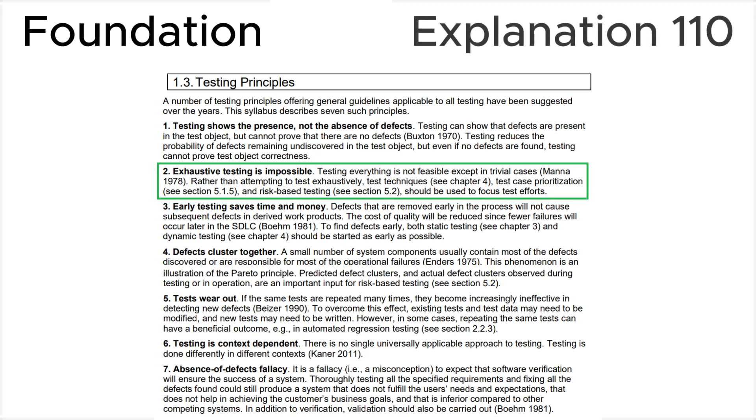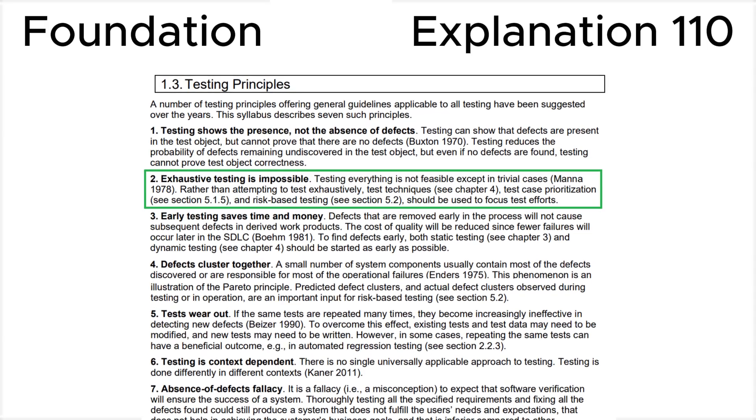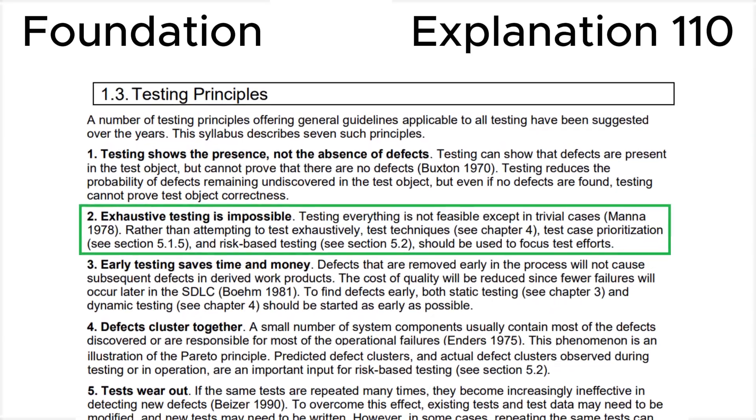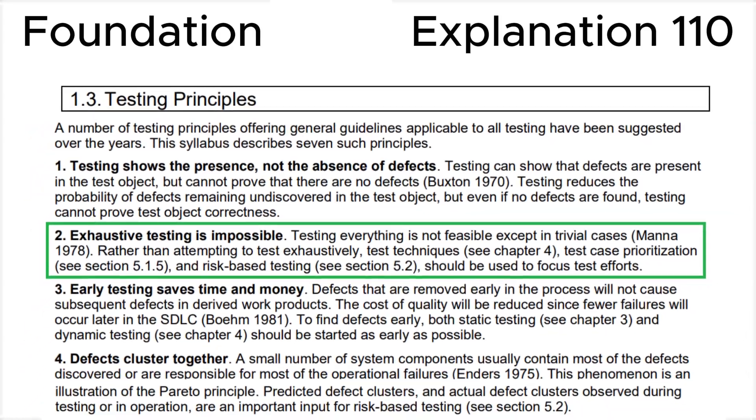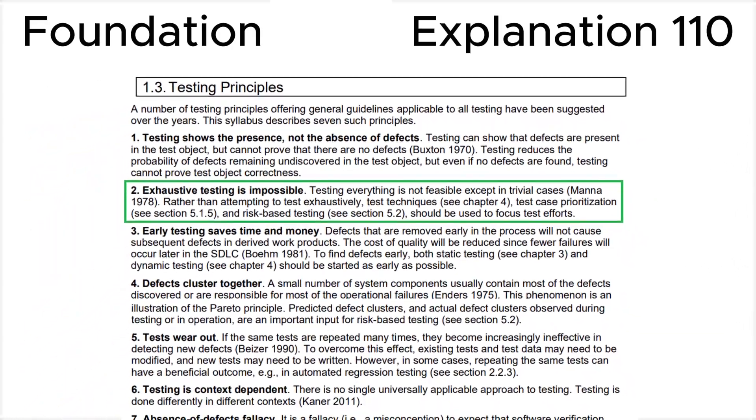Explanation: Finally, let's look at the section 1.3 testing principles in the ISTQB syllabus where we can see that the testing principle 2 is exhaustive testing is impossible. Testing everything is not feasible except in trivial cases. Rather than attempting to test exhaustively, test techniques, test case prioritization and risk-based testing should be used to focus test efforts.